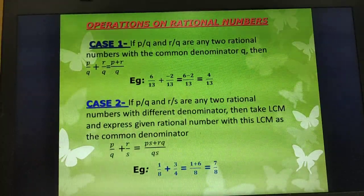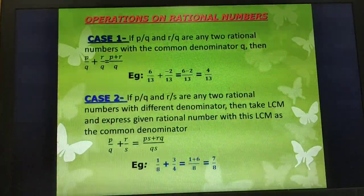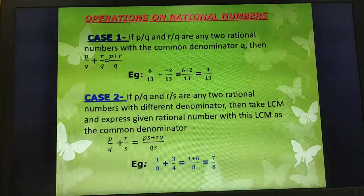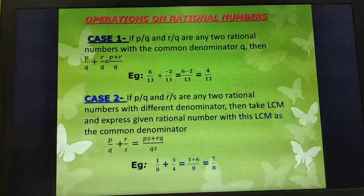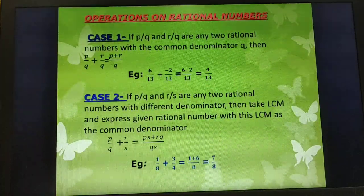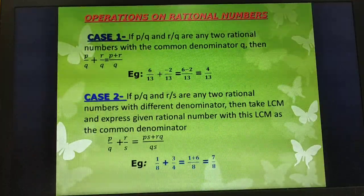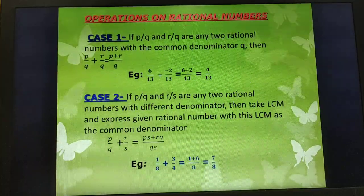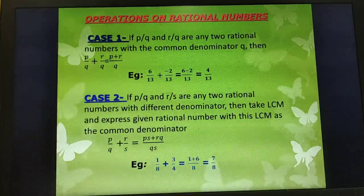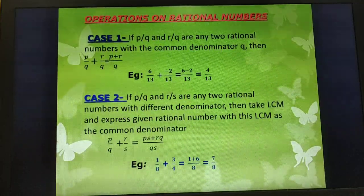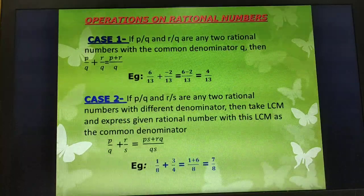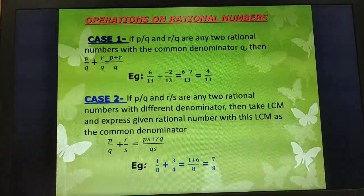Case 2: If P/Q and R/S are any two rational numbers with different denominators, take the LCM and express the given rational numbers with this LCM as the common denominator. So P/Q + R/S = (PS + RQ)/QS. For example, 1/8 + 3/4: the LCM of 8 and 4 is 8, giving us (1 + 6)/8 = 7/8.